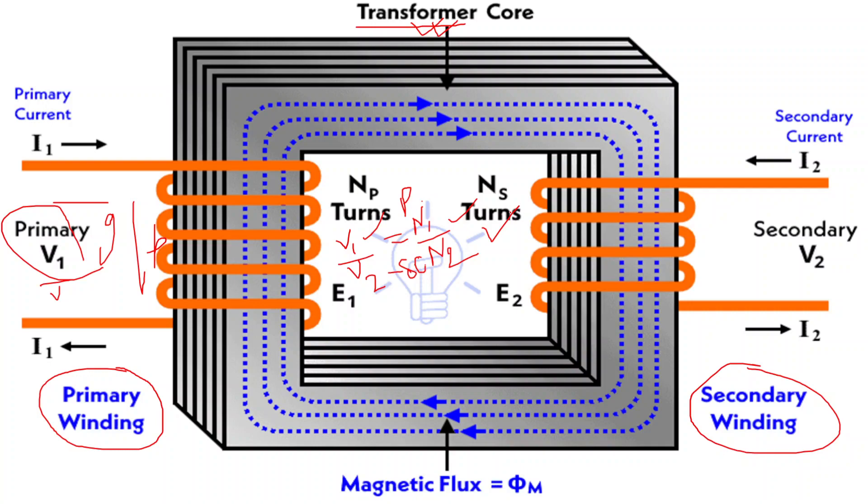Second one is the step-down transformer. Step-down transformer decreases the voltage from the primary to the secondary coil. This is commonly used to reduce the high voltage of power lines to safer and more usable levels for households and businesses.